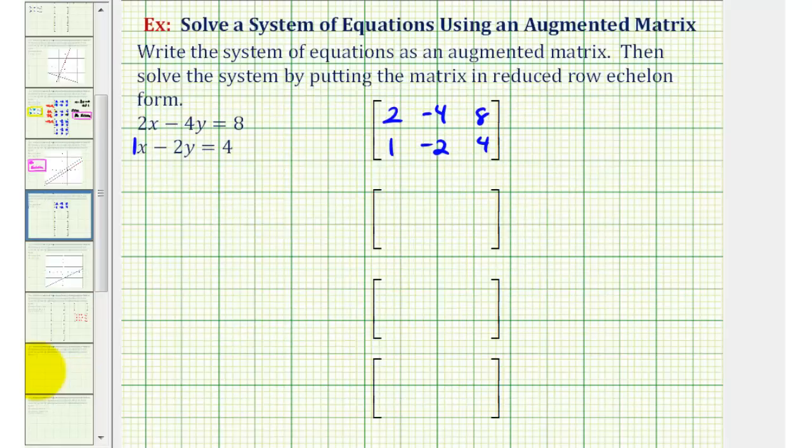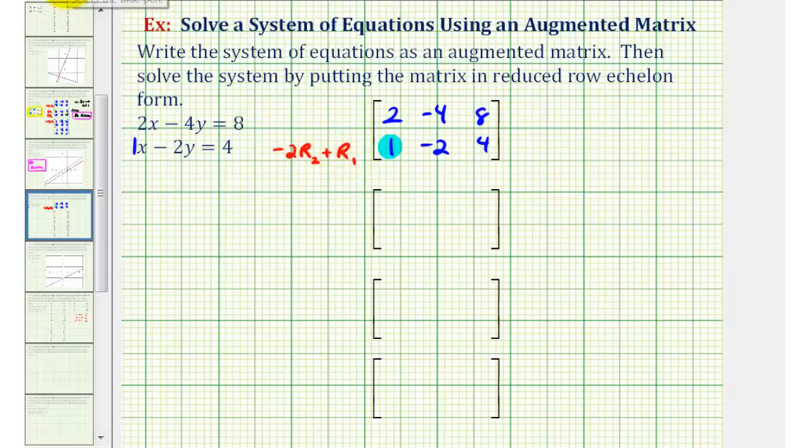Going back to our system, let's start by obtaining a zero in this position here. Since the corresponding element in row one is positive two, notice how if this element here was negative two, we could then add the two rows to obtain a zero. So our first row operation is going to be to replace row two with -2 times row two plus row one.